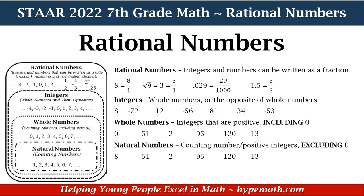Now let's take a look at whole numbers. These are integers that are positive, including 0. So in our example we have 0, 51, 2, 95, 120, and 13 — all whole numbers or integers that are positive. You see no negative numbers for whole numbers.